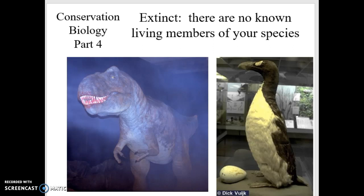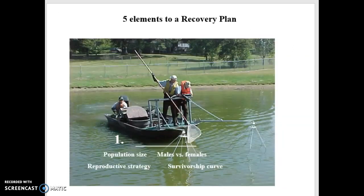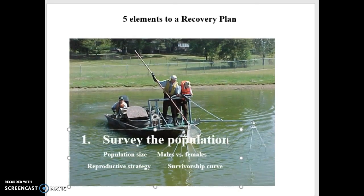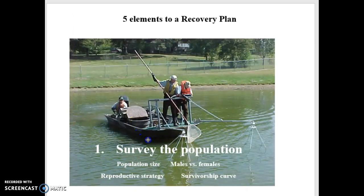What a conservation biologist will try to do is set up a recovery plan. If we identify a population that is vulnerable, threatened, or endangered, let's put together a plan to recover that population. The first step in a recovery plan is to survey the population — how big is it right now? How many males versus females? What's the reproductive strategy of that population? What's the survivorship curve? That's all of the population ecology information we covered in the previous chapters. We need that information to know what we're trying to do and what our goal is.